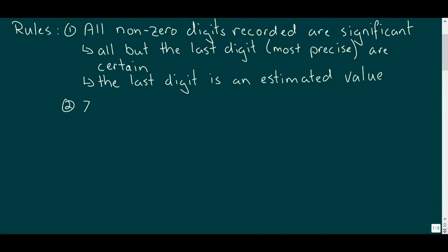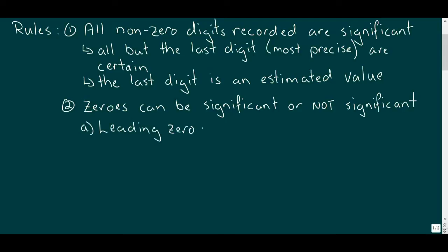First, we have to recognize that zeros can be both significant or not significant depending on their function in the recorded value. For example, leading zeros are placeholders for very small numbers, but don't tell us anything about the recorded value. So these zeros would be deemed not significant.